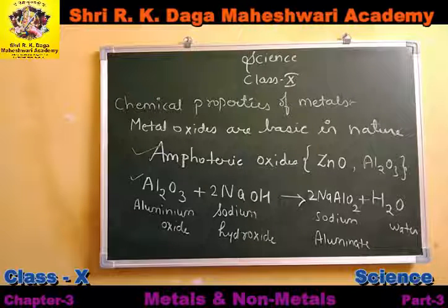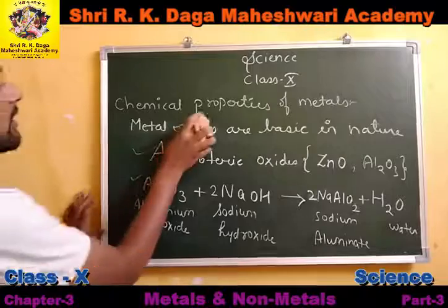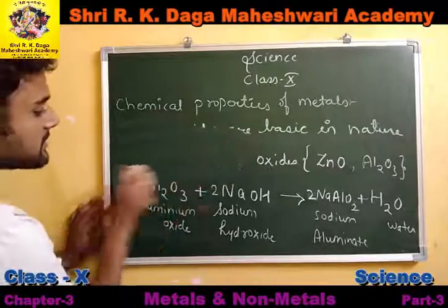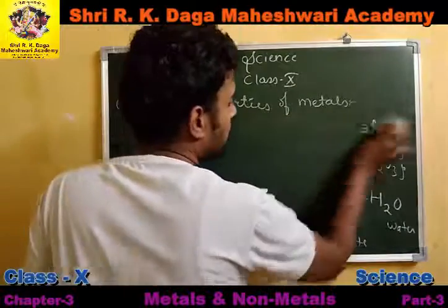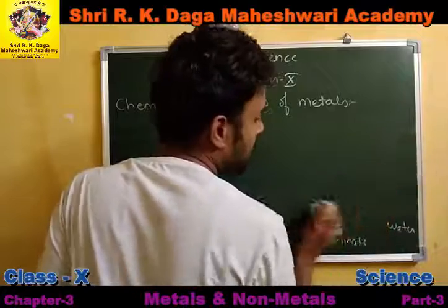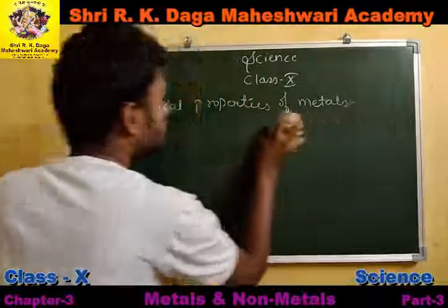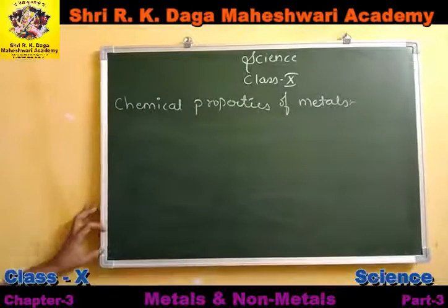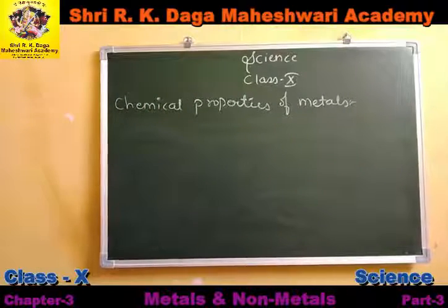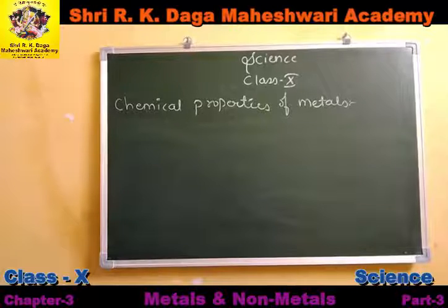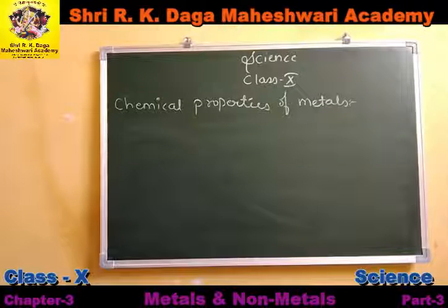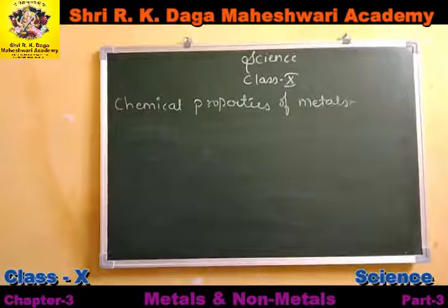When studying any chemistry topic, it is important that all chemical reactions are memorized well. You should also learn the atomic numbers and valences of all elements at least up to atomic number 30. If you want, you can learn more than that, but at least up to 30 is necessary.